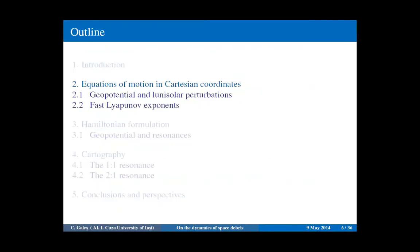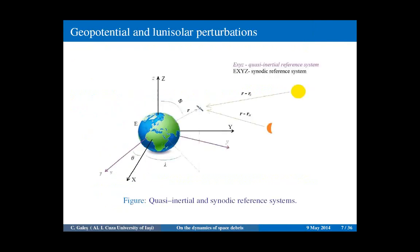Let's see the equations first in Cartesian coordinates. The Kepler motion of a satellite or space debris is perturbed by the oblongness of the Earth, rotation of the Earth, Sun, Moon, and other non-gravitational forces like solar radiation pressure or atmospheric drag, if the body reaches the LEO region.